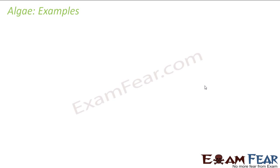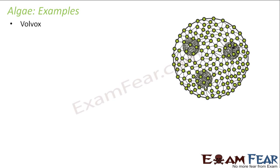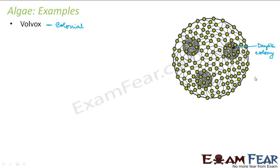Let us look at some examples of algae. Volvox is one example, which is a colonial algae — it exists in colonies. Here you can see too many of them joined together to form this kind of structure. In this picture you can see structures formed inside: the big structure is the parent colony, and the smaller structures inside are known as the daughter colony.